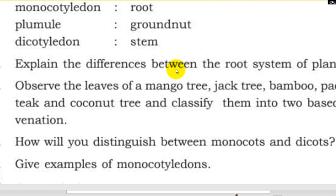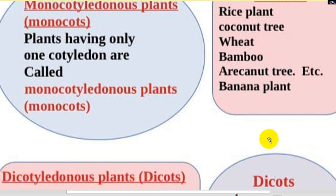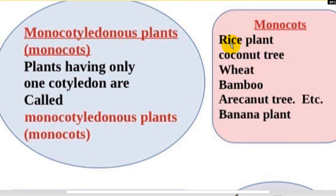Next question: how will you distinguish between monocots and dicots? Give examples of monocotyledons. Examples: rice plant, coconut tree, wheat, bamboo, areca nut tree, banana plant.